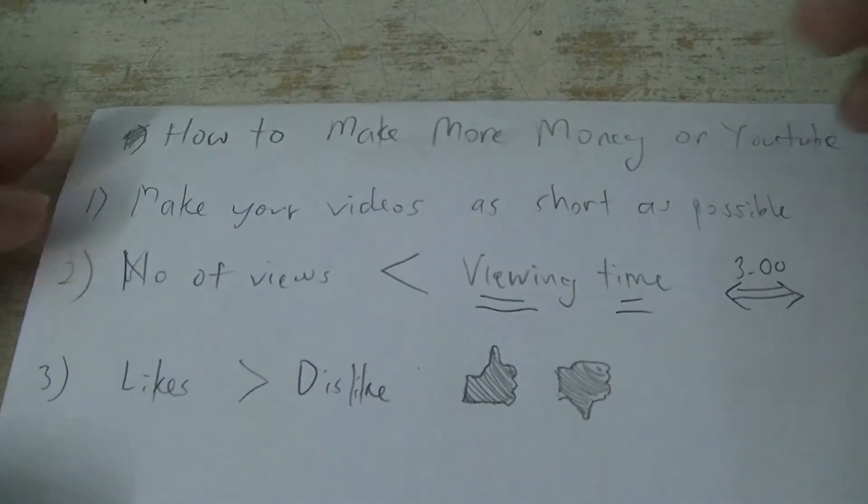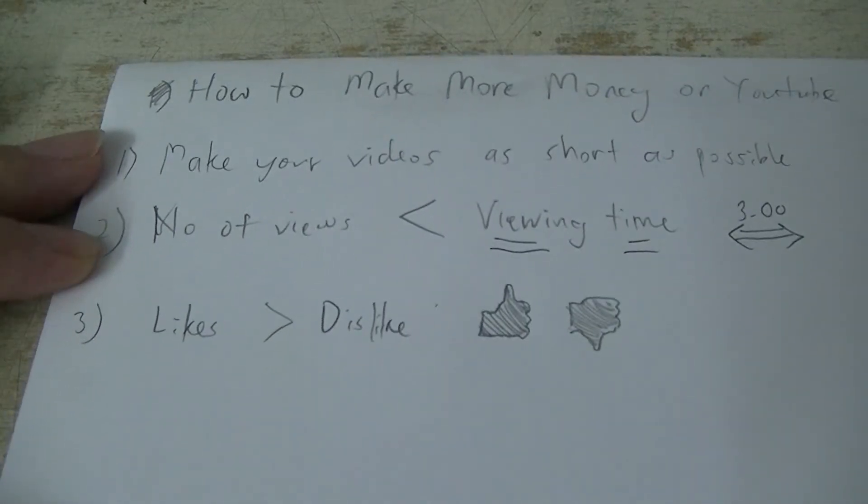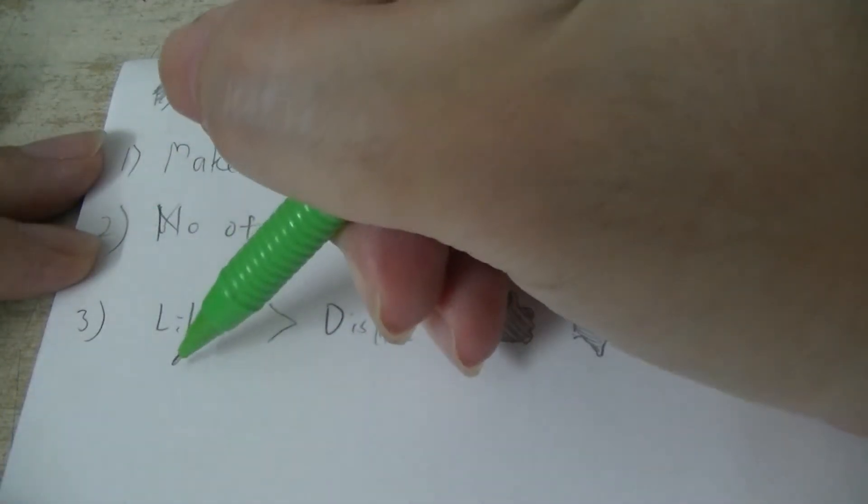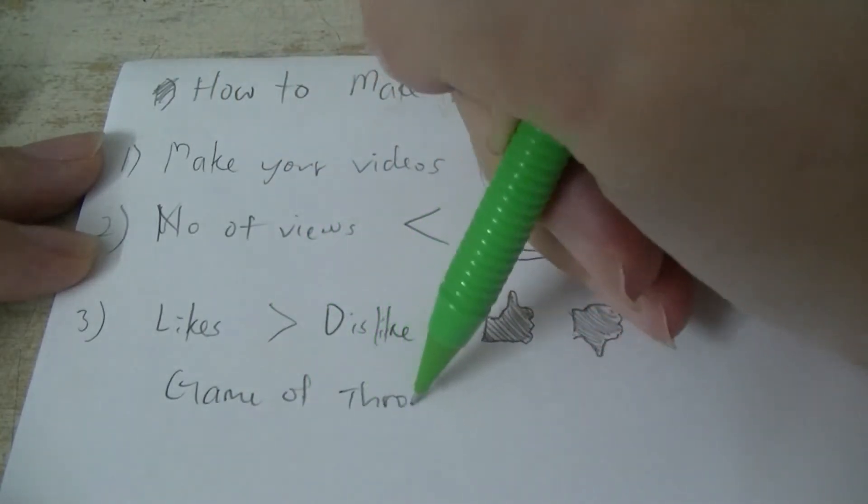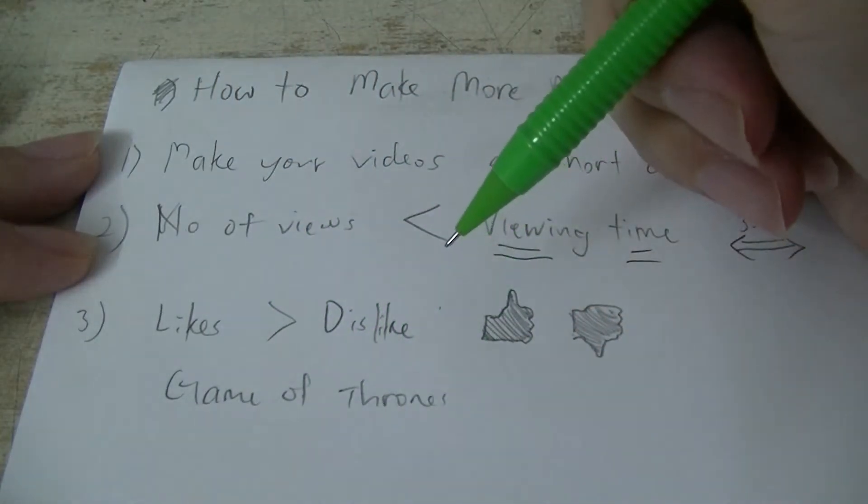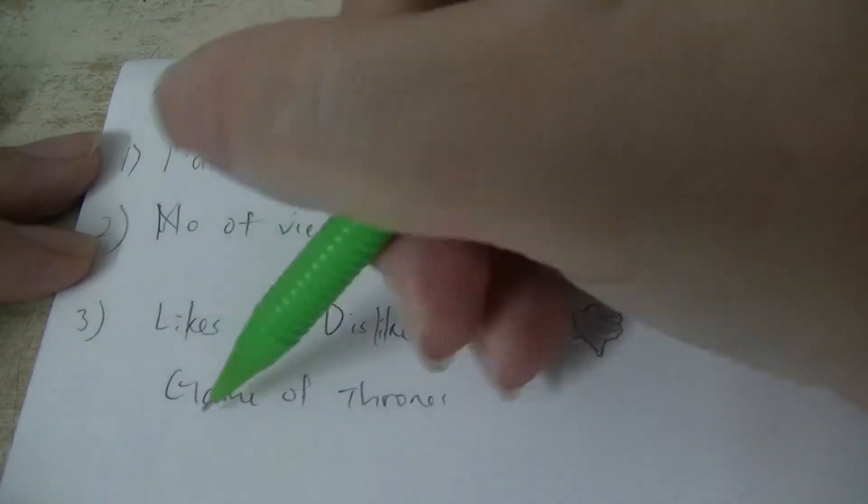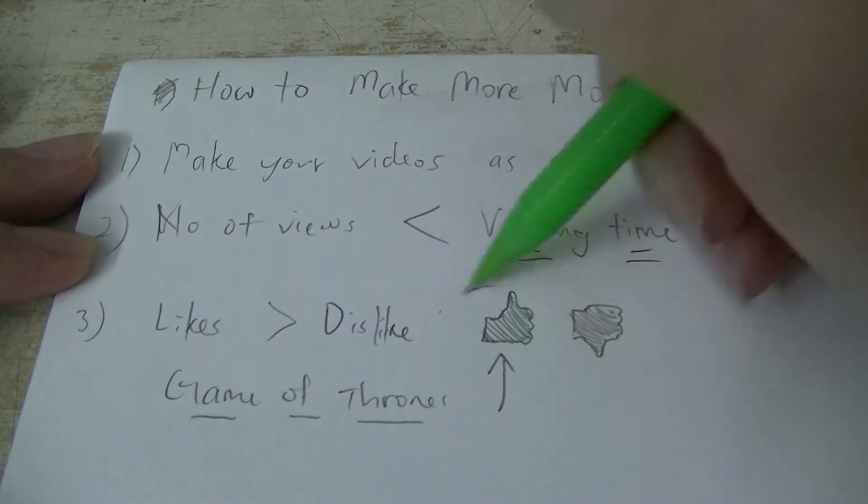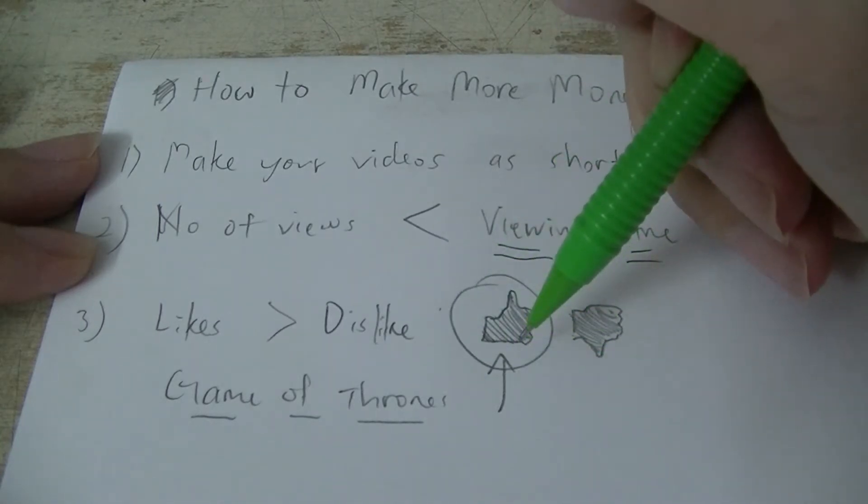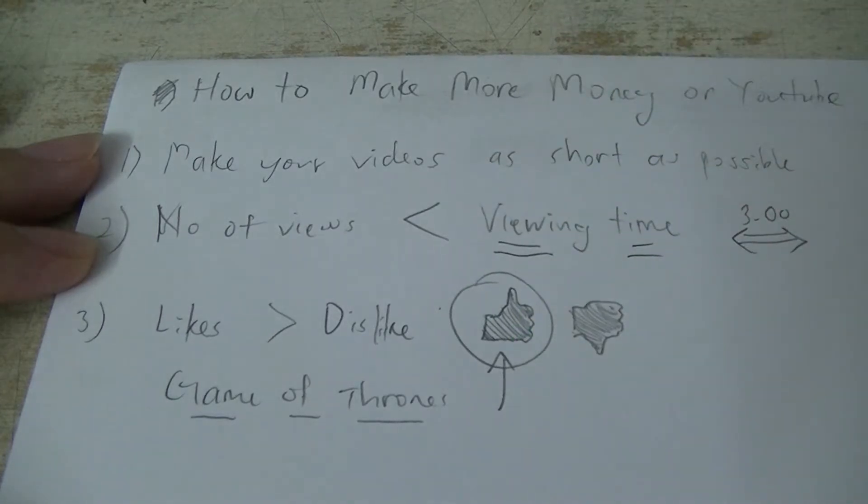In terms of when you are searching for something like a particular topic, Game of Thrones, there are a lot of videos out there that feature Game of Thrones. So if you were to search for Game of Thrones, the video that has the most likes would be on the first or front page. So the more likes you have, the better.